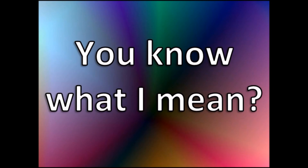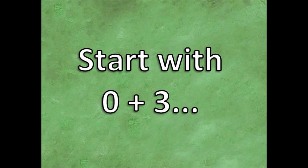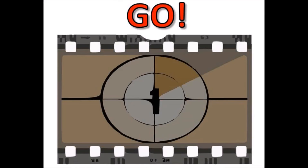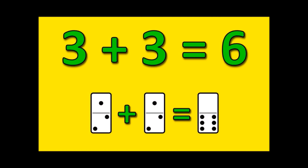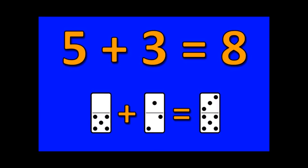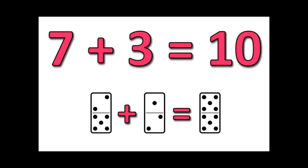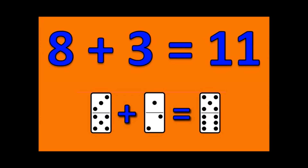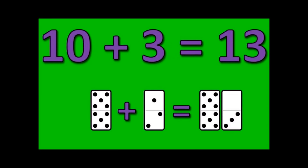It's pretty simple, you know what I mean? Excellent job! Now it's time for us to turn the numbers around. Start with zero plus three and go up. Ready? Here we go. Zero plus three is three. One plus three is four. Two plus three is five. Three plus three is six. Four plus three is seven. Five plus three is eight. Six plus three is nine. Seven plus three is ten. Eight plus three is eleven. Nine plus three is twelve. Ten plus three is thirteen.